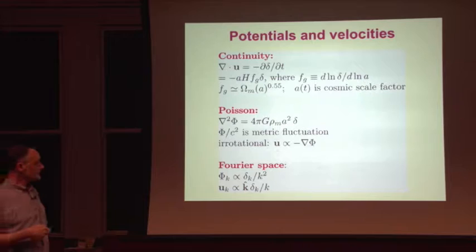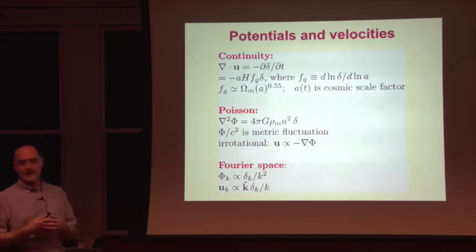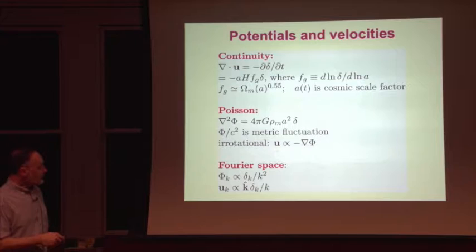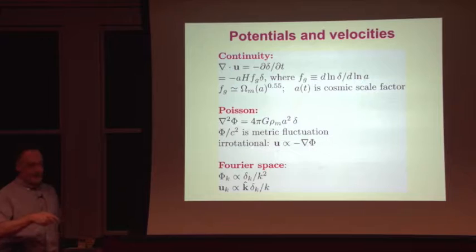Alternatively, you can express things in terms of the gravitational potential. Phi should satisfy Poisson's equation sourced by the density fluctuation delta. Phi is very important because where the fluctuations are weak, phi over c squared is small, and these represent the fluctuation in the metric, the deviations from the pure Friedmann-Robertson-Walker form. And if the velocity field is irrotational as it should be, then the velocity should be writeable as the gradient of the potential.